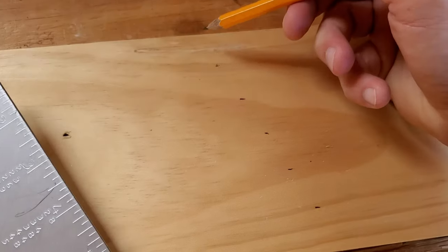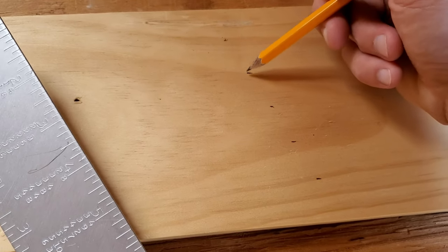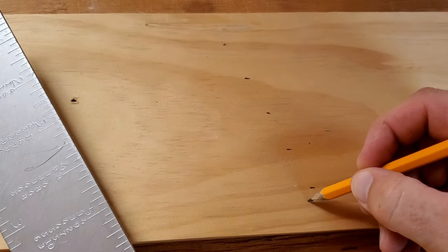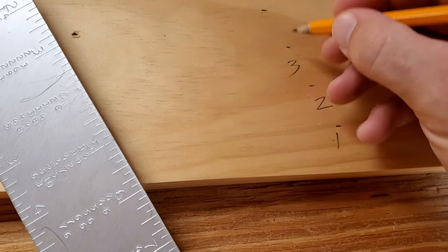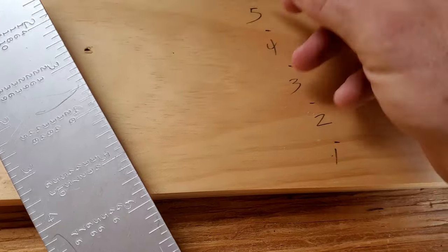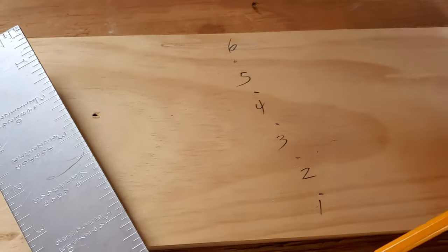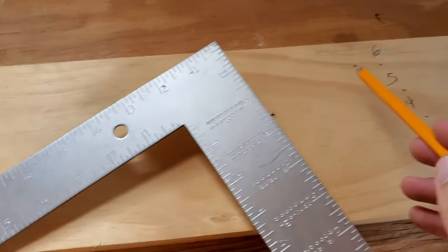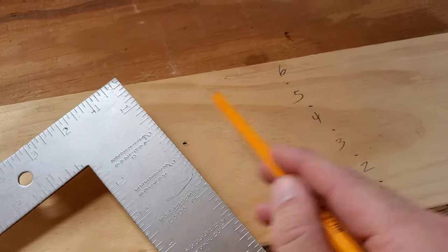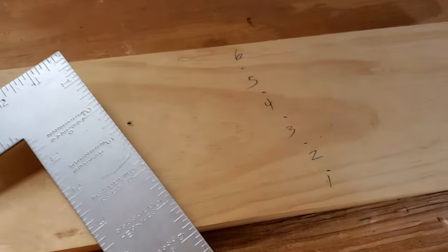Now each mark is the same distance all the way down. So I got one piece here. One, two, three, four, five, six. Now do the same thing on the other side of this board and then I can pop a chalk line on each mark and then rip it down and have equal lengths.